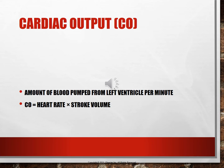Stroke volume is the amount of blood ejected by the left ventricle during each contraction. Variables influencing stroke volume and ultimately cardiac output include heart rate, preload, afterload, and contractility. Preload refers to the degree of myocardial fiber stretch at the end of diastole, just before contraction. The stretch on the muscle fibers results from the volume contained within the ventricle at the end of diastole — how much those myocardial fibers are stretched just before the ventricle pumps.